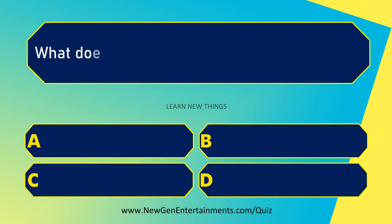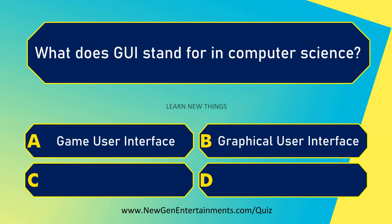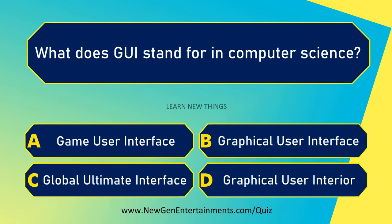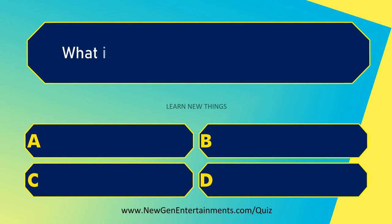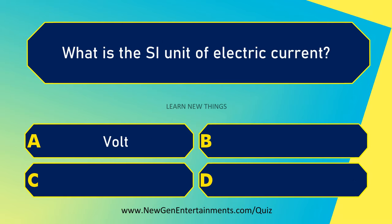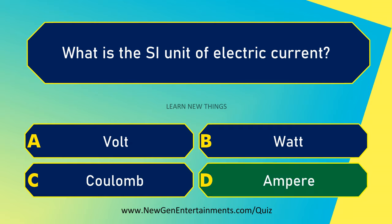What does GUI stand for in computer science? Graphical User Interface. What is the SI unit of electric current? Ampere.